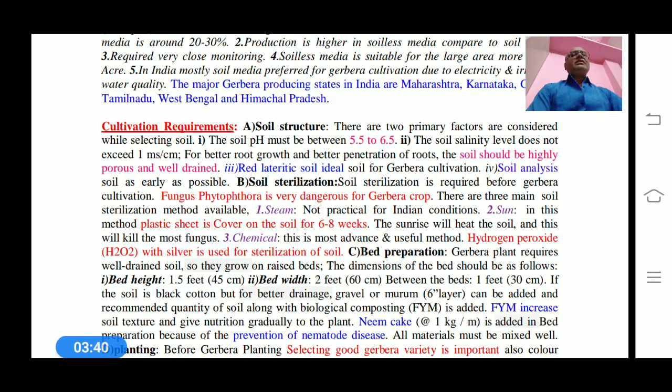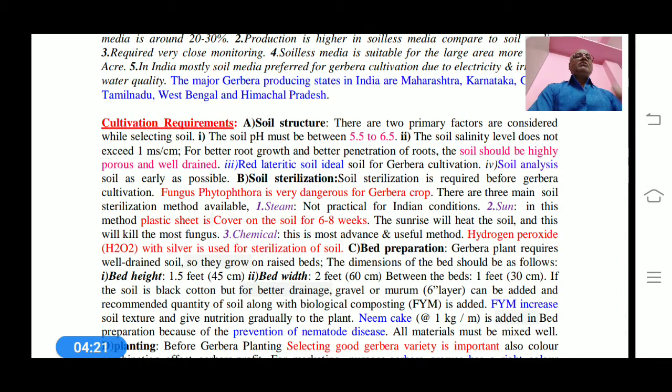For cultivation requirements, soil structure is important. There are two primary factors to consider when selecting soil: the soil pH must be maintained between 5.5 and 6.5, and soil salinity level should not exceed 1 mS per centimeter.